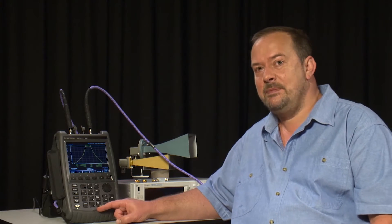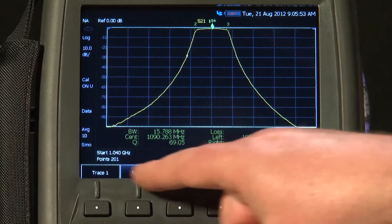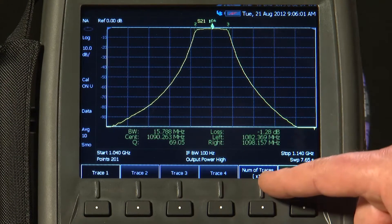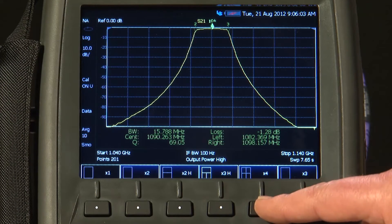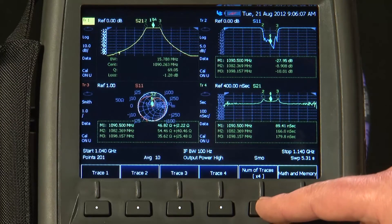And amazingly, as you would expect with a Benchtop Vector Network Analyzer, if I press the Trace button, we have actually got four traces available here. Currently, I have only got one trace displayed, but if I press the Number of Traces button, I can select all four to be displayed on the screen at the same time.